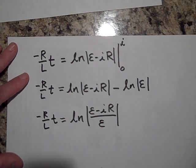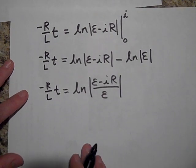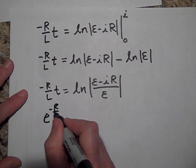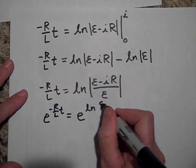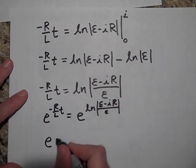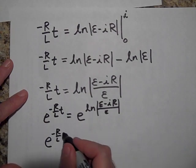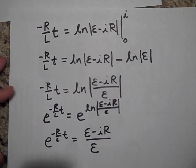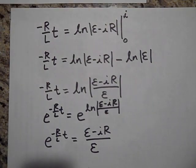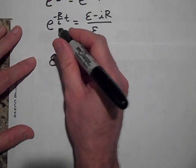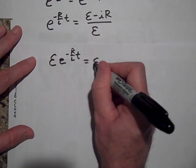Now I'd like to get I alone on one side. To do that, I'll raise e to both sides. Since both sides are equal, e raised to the left side equals e raised to the right side. The exponential and natural log are inverses, so I get: e to the negative R over L times T equals (E minus IR) over E. Bringing the E on the other side: E times e to the negative R/L·T equals E minus IR.